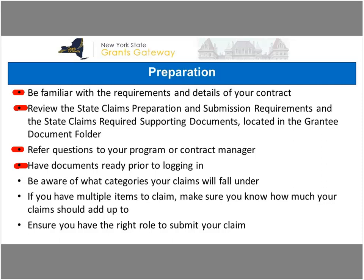Be aware of what categories your claims will fall under. If you have an expenditure budget, there are several different categories you could have claims for. For example, if you have five thousand dollars for contractual, make sure you know it goes in contractual with the supporting documentation. If you have multiple items to claim, make sure you know what the total should add up to — say fifteen thousand dollars — so once you enter it in the gateway you can double check that final amount.